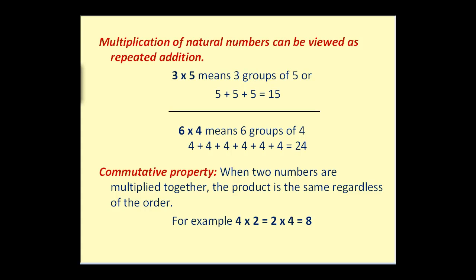First, the multiplication of natural numbers can be viewed as repeated addition. So for example, we can view 3 times 5 to mean 3 groups of 5, or 5 plus 5 plus 5, which would equal 15. And the same idea: 6 times 4 means 6 groups of 4, which would give us 24.